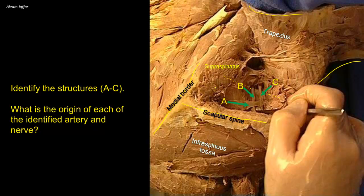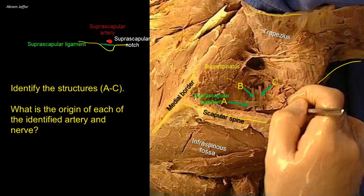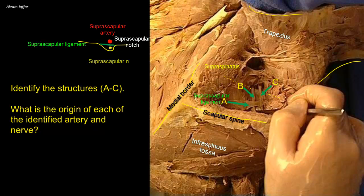The suprascapular notch is bridged by the suprascapular ligament, converting the notch into a foramen. A is the suprascapular ligament. Passing above the suprascapular ligament is the suprascapular artery and vein, while the suprascapular nerve passes beneath the ligament. So C is the suprascapular artery, and B, which passes underneath the ligament, is the suprascapular nerve.